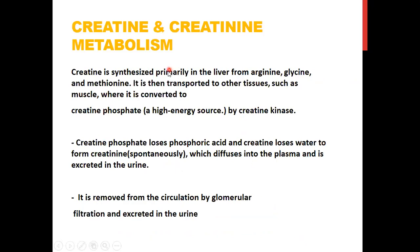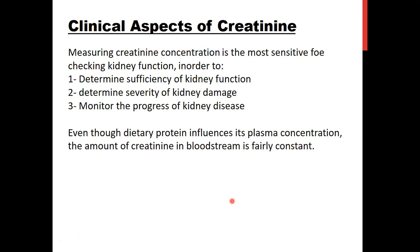Creatinine is synthesized in the liver from arginine, glycine, and methionine, then transported to tissues such as muscle where it is converted to creatine phosphate, a high-energy source, by creatine kinase. Creatine phosphate loses phosphoric acid and creatine loses water to form creatinine, which diffuses into plasma and is excreted in urine via glomerular filtration. We measure creatinine to determine the sufficiency and severity of kidney function and damage.